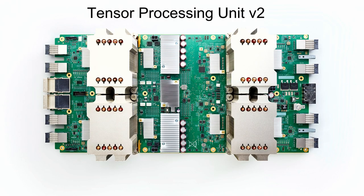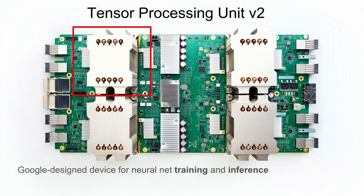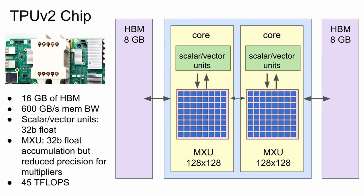The system we've come up with for training is called the Tensor Processing Unit version 2. One device has four chips on it. Zooming into one chip, it has a large matrix multiply unit—a 128 by 128 matrix floating-point multiply-add systolic array for doing multiplies—as well as scalar and vector units. It has two cores with 16 gigabytes of HBM memory attached to each chip, with each core able to access eight gigabytes. It has quite a lot of memory bandwidth. We use reduced precision in the multiplier units but support 32-bit floating-point operations in the rest of the chip.